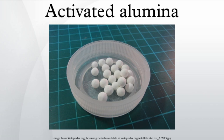Activated alumina is used for a wide range of adsorbent and catalyst applications, including the adsorption of catalysts in polyethylene production, in hydrogen peroxide production, as a selective adsorbent for many chemicals including arsenic and fluoride, and in sulfur removal from gas streams.